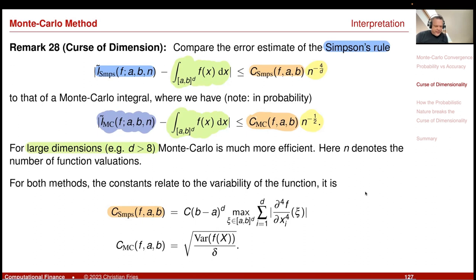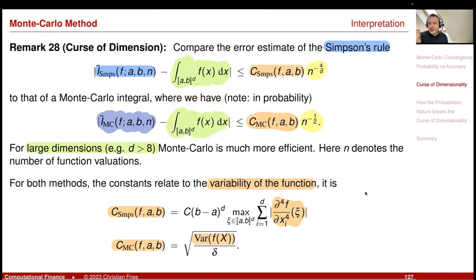The constant in Simpson's rule estimates how much variability the function has — how much it is changing. For Monte Carlo it is really the same: the constant relates to the variability of the function. If the function is just a constant, you only need one single point to get the integral. If the function is linear, two points suffice. So the way the function changes influences the accuracy of the approximation.